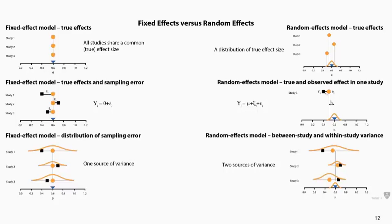Under the fixed effect model there is one source of variance, captured by a single normal curve for each study. Under the random effects model, there is one more layer — the variance between studies — which is why you have four normal curves instead of three. We still have the within-study variance, but the additional curve at the bottom shows the distribution of the true effect size: that is your between-study variance.